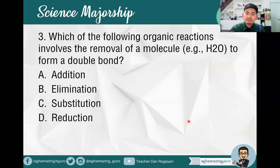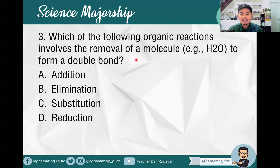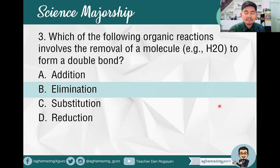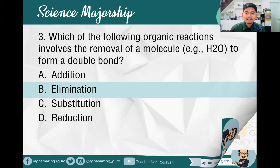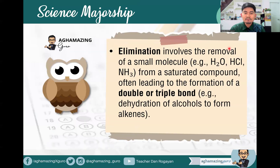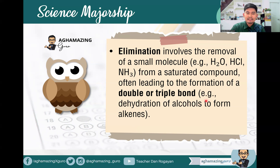Item number three: which of the following organic reactions involves the removal of a molecule — for example, water — to form a double bond? A. Addition, B. Elimination, C. Substitution, or D. Reduction. The answer is letter B — elimination. Elimination involves the removal of small molecules like water, hydrochloric acid, or NH3 from a saturated compound, often leading to the formation of a double or triple bond, like the dehydration of alcohols to form alkenes.